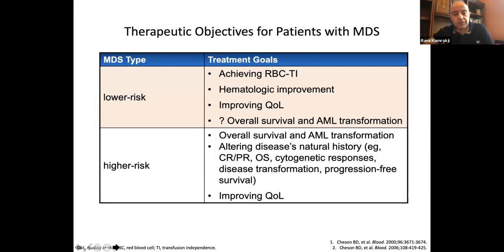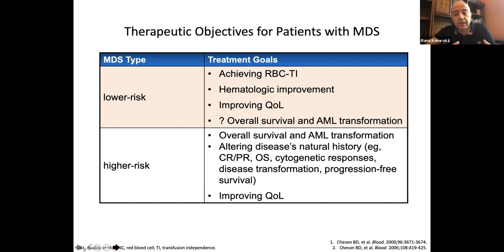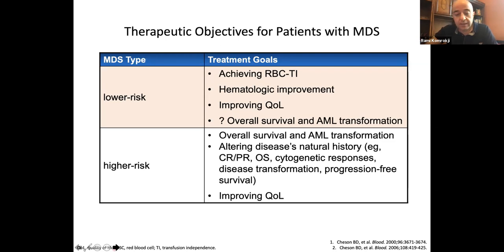Once we confirm the diagnosis and estimate the risk, we generally think of patients in two main categories: lower risk disease or higher risk disease. The only cure for MDS is transplant, but the procedure itself is intense and there is transplant-related mortality. We always try to weigh disease risk versus procedure risk. If patients are in the lower risk group, our goal is to improve blood counts and quality of life. If patients have higher risk disease, our treatment is to try to improve survival, push away the leukemia, and potentially cure the disease with allogeneic stem cell transplantation.